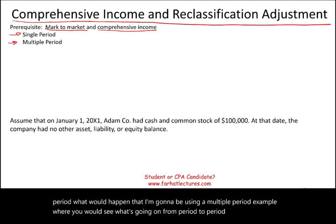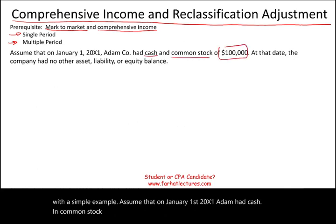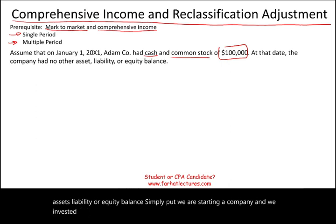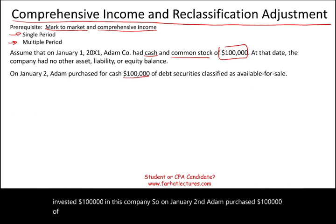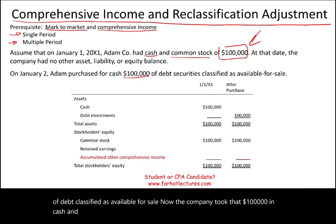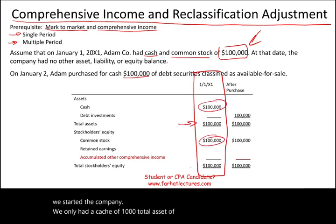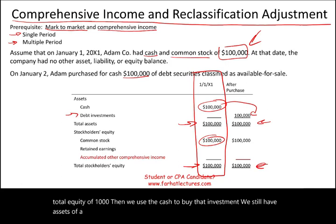Let's start with a simple example. Assume that on January 1st, 20X1, Adam had cash and common stock of $100,000. The company had no other assets, liabilities, or equity balance. Simply put, we are starting a company and invested $100,000. On January 2nd, Adam purchased $100,000 of debt classified as available for sale. The company took that $100,000 in cash and purchased debt. We had assets of $100,000 and equity of $100,000.